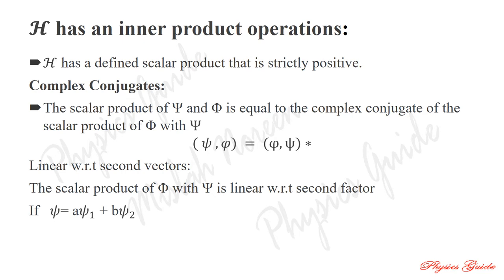The inner product is also called the dot product or scalar product. For two vectors a and b, the inner product or dot product of a and b equals a·b equals |a||b|cos(θ). This concept of dot product is used for the inner product in Hilbert space.